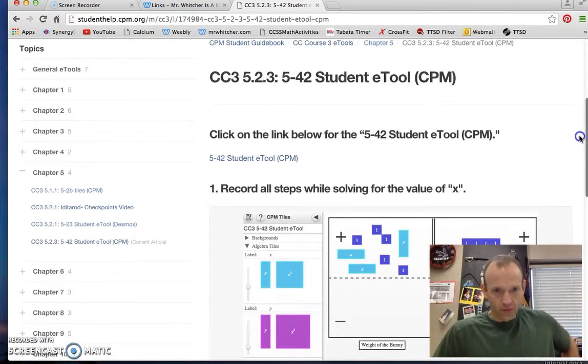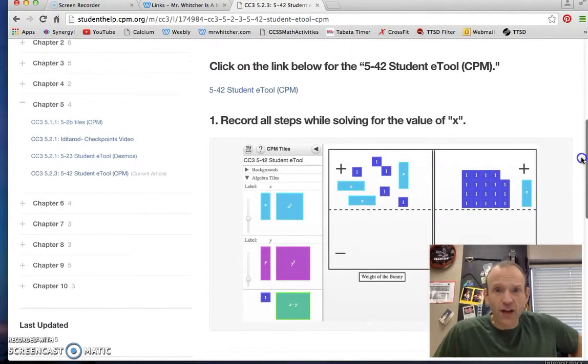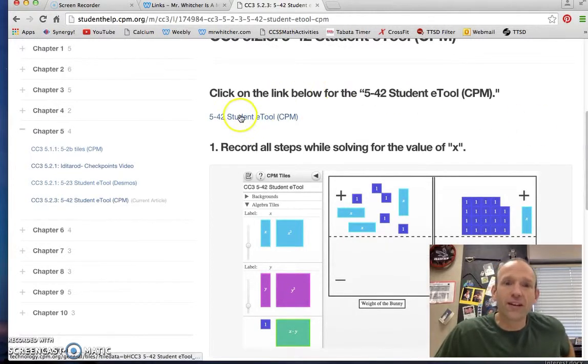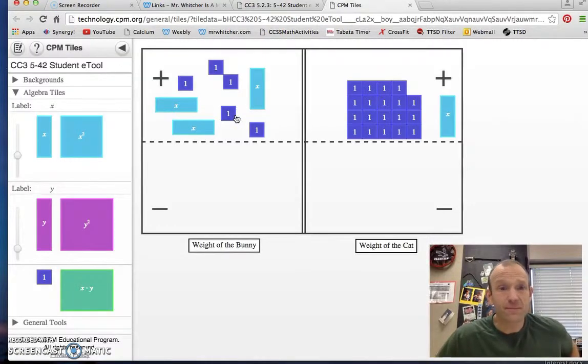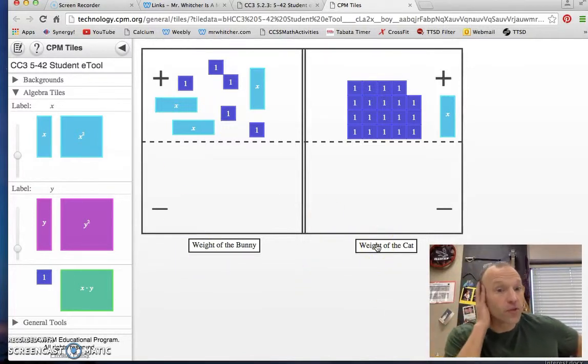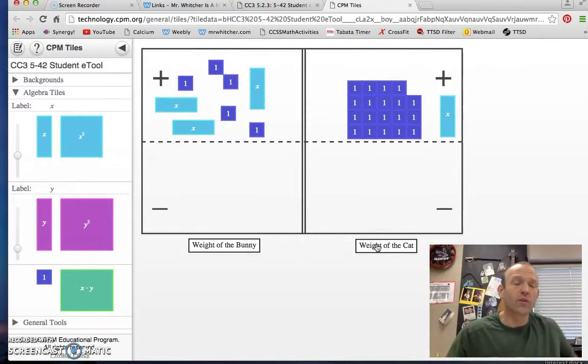There we go. Problem 42. It's going to be an algebra tiles tool. Now we have another link. I know there's lots of clicking and navigating here, but you know how to do that, right? So notice with this problem, we've got our weight of the bunny, weight of the cat, all represented here, and we could work the problem.